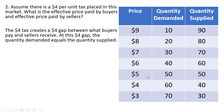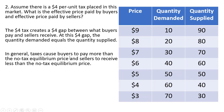But with the tax, there is going to be a gap between what buyers pay. Taxes cause buyers to pay more than the no-tax equilibrium price, so the effective price for buyers will rise above $5. And for sellers, sellers will receive less than the no-tax equilibrium price — something less than $5. So we're trying to find a $4 gap between what buyers pay and sellers receive after the tax is imposed, where the quantity demanded equals the quantity supplied.